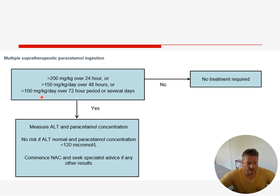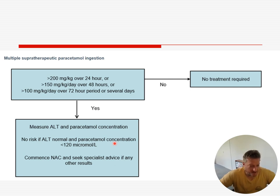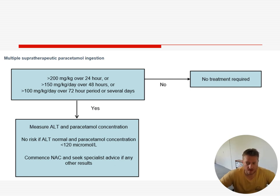If super-therapeutic dosing is suspected, measure ALT and paracetamol concentration. If ALT is normal and paracetamol concentration is less than 120, you don't need to worry. But if it's more than that, start NAC, talk to a toxicologist, and refer to paediatric medicine.